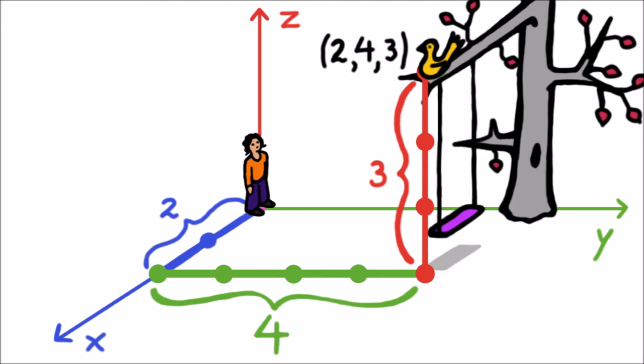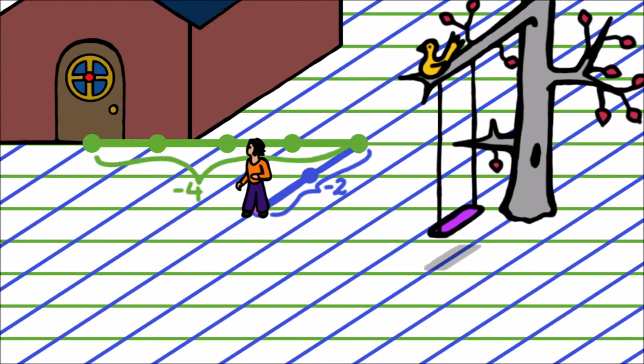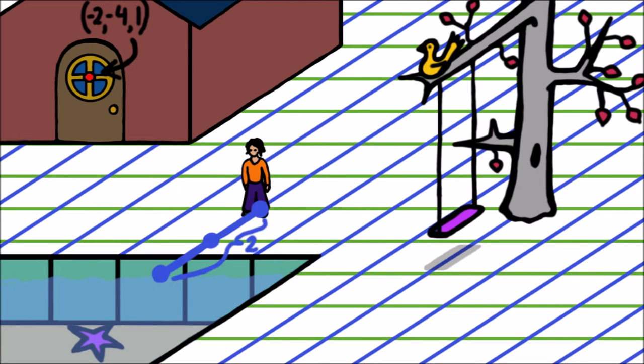If you need to move left instead of right, then the first number will be negative. If you need to move backwards instead of forwards, then the second number will be negative. And if you need to move down instead of up, then the third number will be negative.